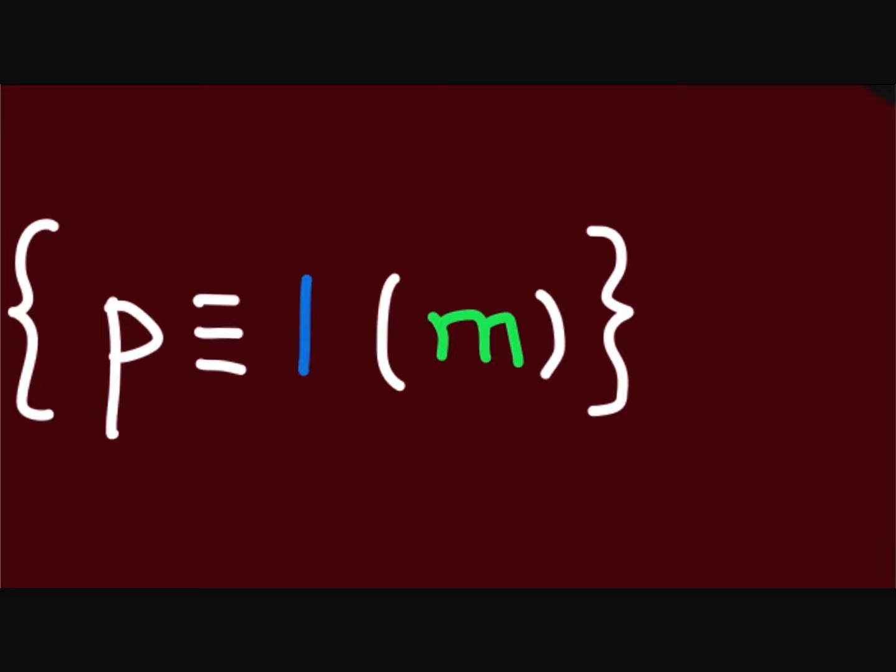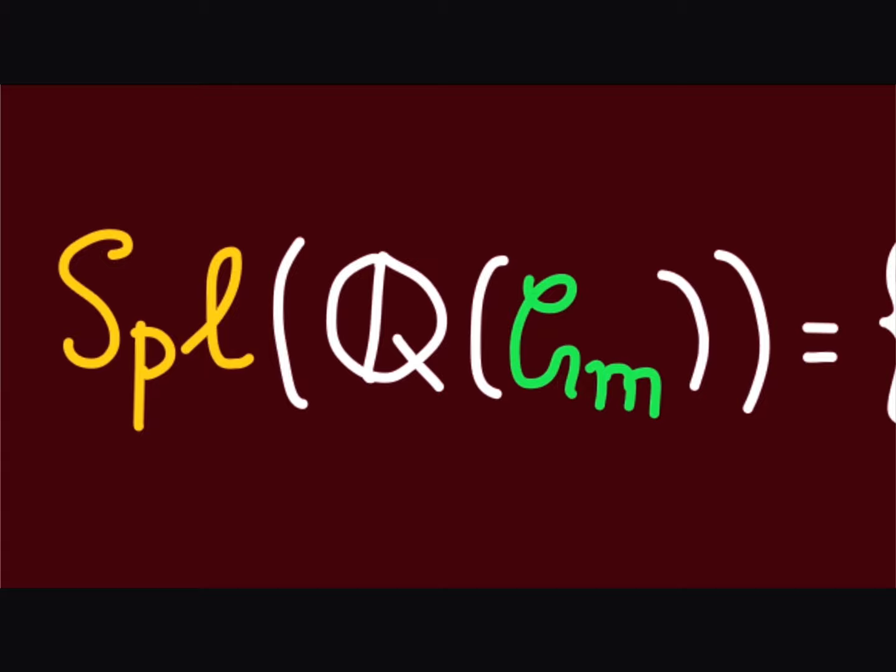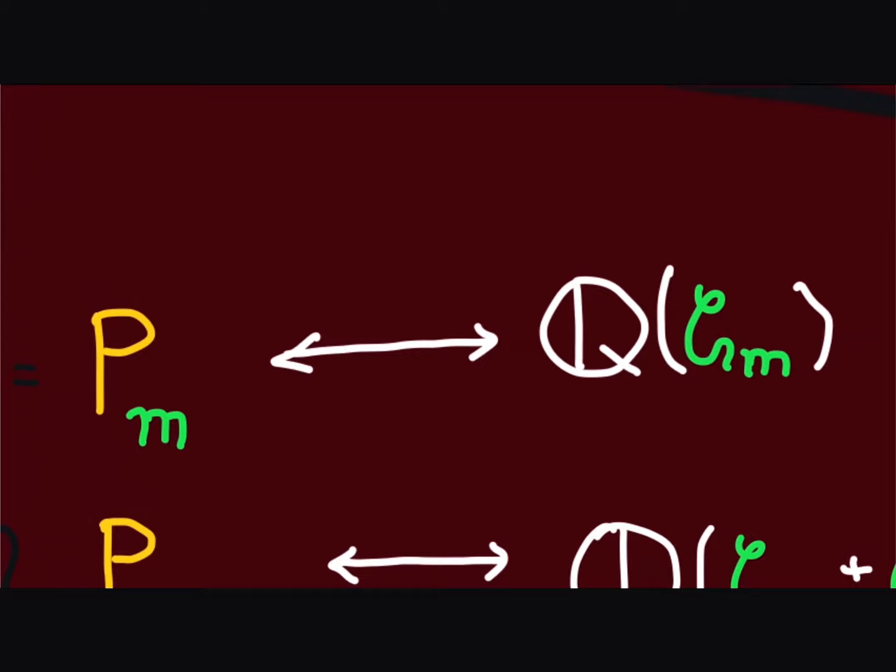Observe that the primes in P_m, those that are congruent to 1 modulo m, are exactly the primes that split in the m-cyclotomic field. Therefore, the class field for P_m is the m-cyclotomic field.